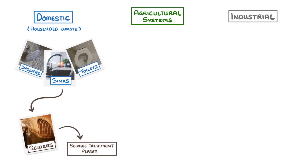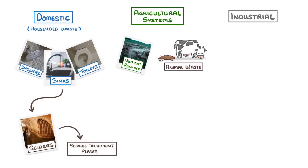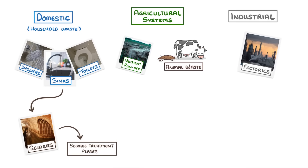Agriculture also produces loads of wastewater, particularly in the forms of nutrient runoff from fields and animal waste from farms. And finally, industrial sources refers to things like factories that make and use chemicals.